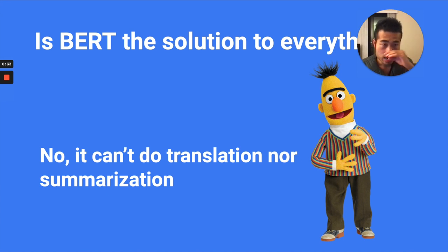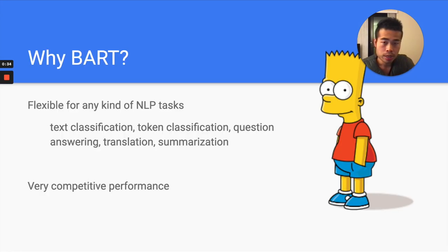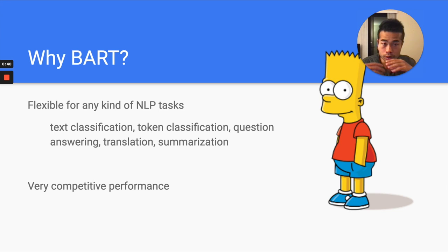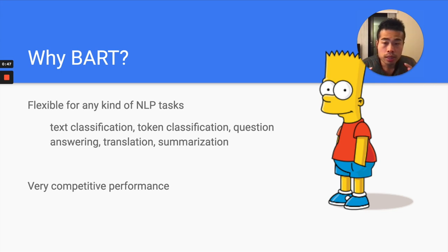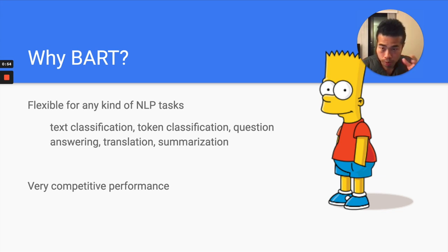It couldn't. So that's why we need BART, which is a model that's kind of built for text generation tasks. And you can also use it for text classification, token classification — basically every kind of NLP task that you can think of, you can use BART.